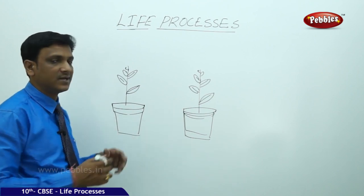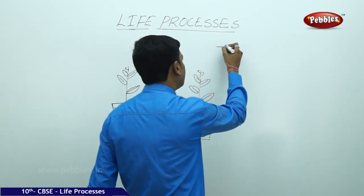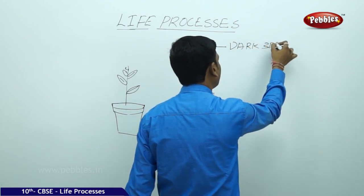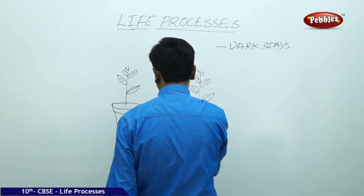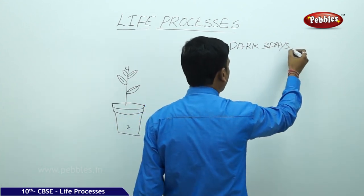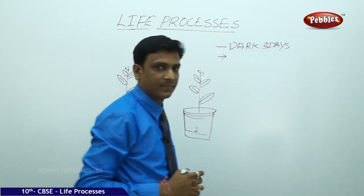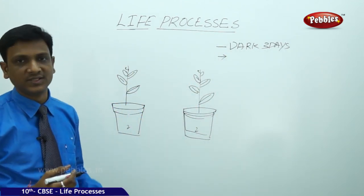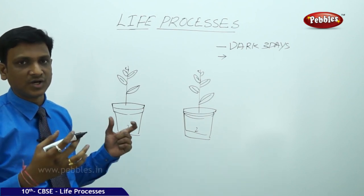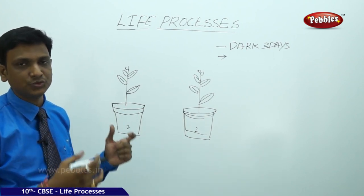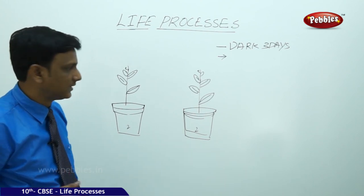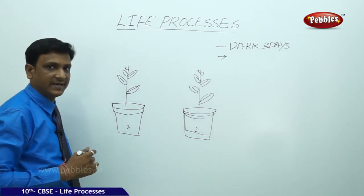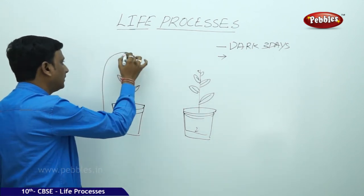We keep the potted plant in the dark for three days to destarch it. We take two plants for this experiment and keep both in the dark for three days. After three days, the starch already present in the leaves is used up. We then bring the plants out into sunlight.